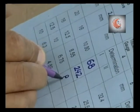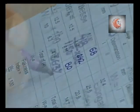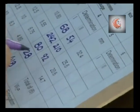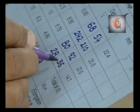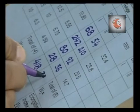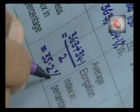In this case, the flakiness index of aggregate comes out to be 36.3 percent. Similarly, the flakiness index for a second sample from the same lot is calculated. The average of two values obtained is reported as the final result. A flakiness index in excess of 35 to 40 percent is considered undesirable.